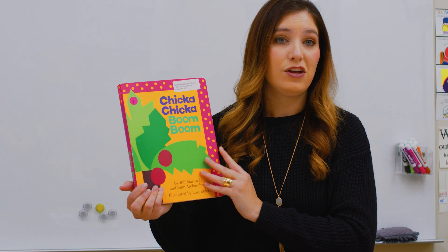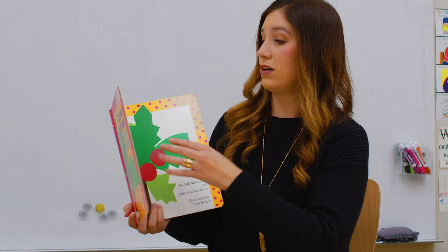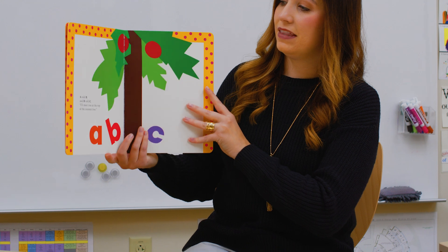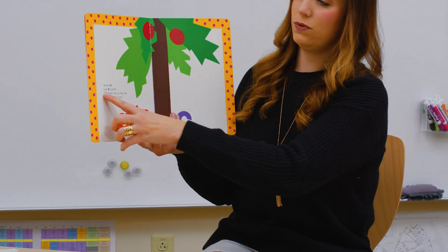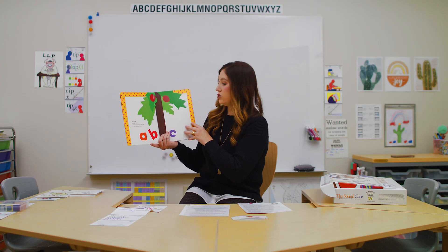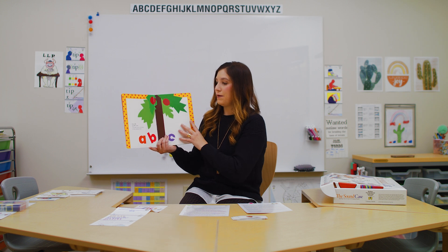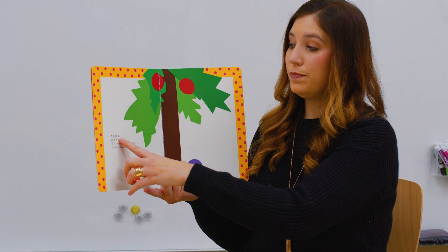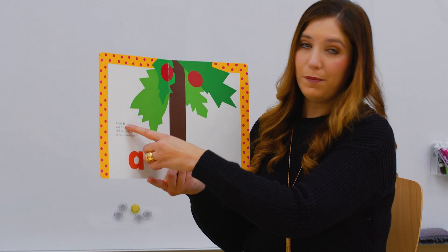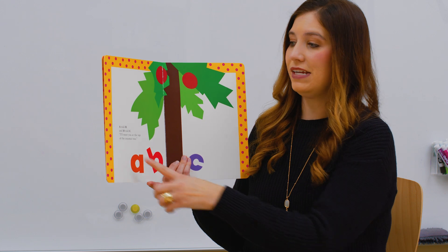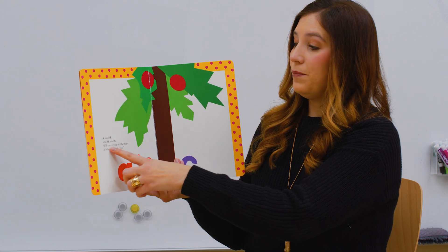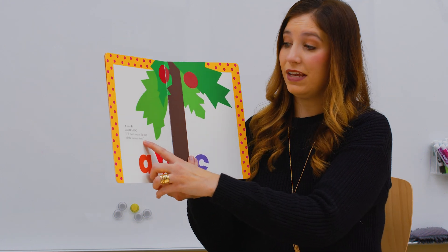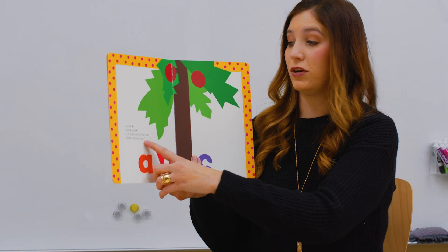On the second reading the next day, you're going to point out the punctuation marks. You can review what you talked about the first day, but on the second day you'll show — oh, that's a quotation mark, that's a period. For example: here's where I start reading, that's a capital letter A. You're going to say 'A told B,' and look, there is a comma right there — that means I pause when I read. 'And B told C, I'll meet you at the top of the coconut tree.' Every time we end a sentence, we end with a period or some other punctuation mark.